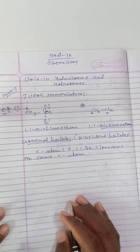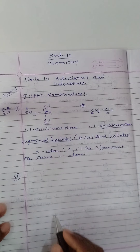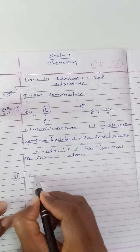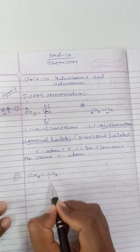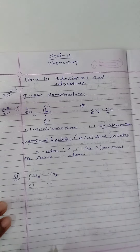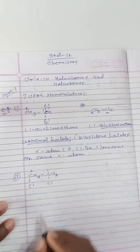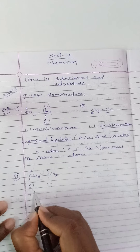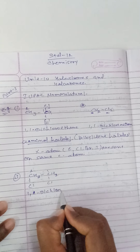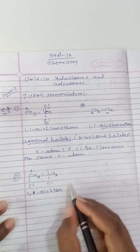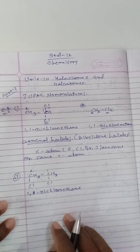Another example: CH2Cl-CH2Cl. Numbering: one, two. So here we have 1,2-dichloro. For a two-carbon chain, we write ethane. The IUPAC name is 1,2-dichloroethane.